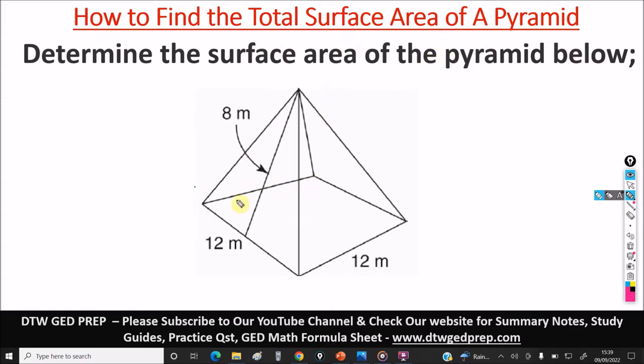The pyramid has a base and the base is a square. If you see 12 here, 12, it means that this is a square. All sides are equal. That's 12 here and also 12 here. So it's a square.